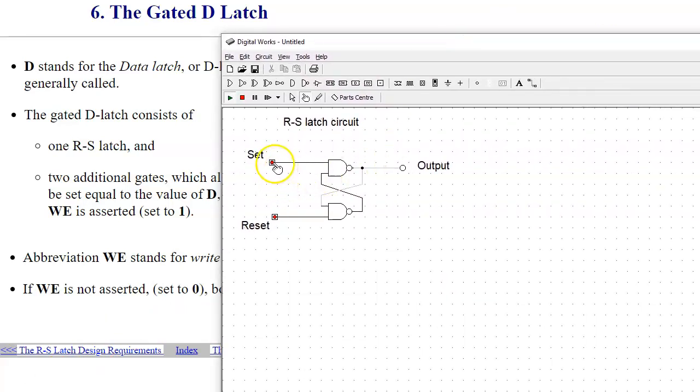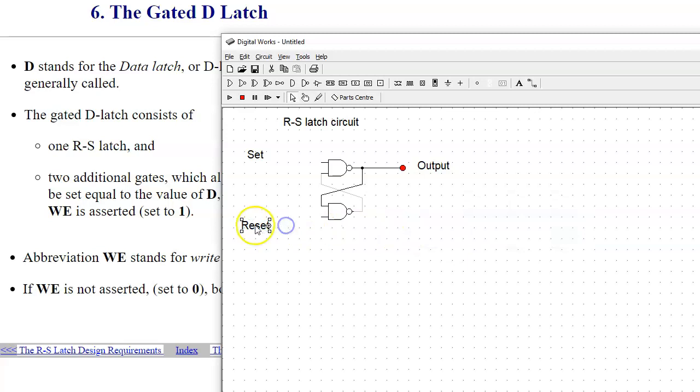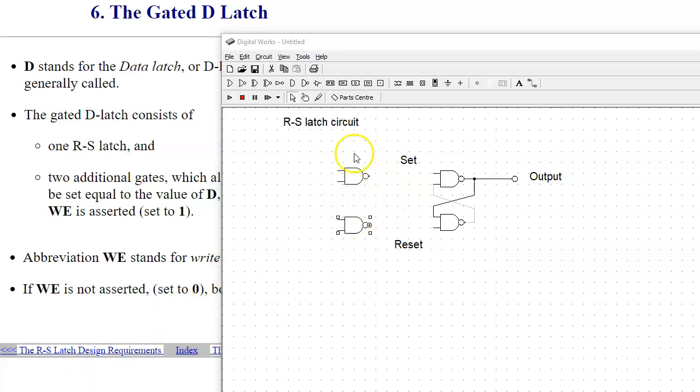I will modify our circuit, having the function stop running. You can see I'm adding two new NAND gates. I will also need one inverter and two new inputs, which are the Data and the Write Enable signal.